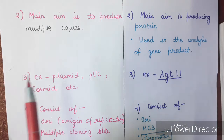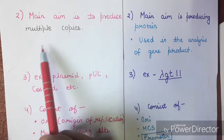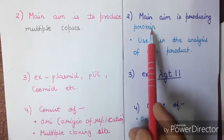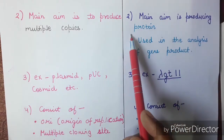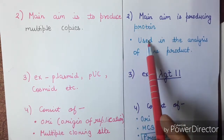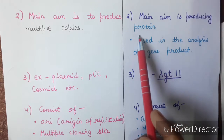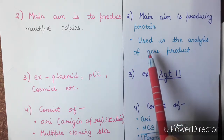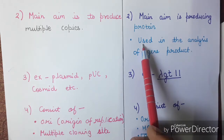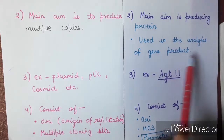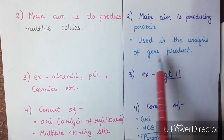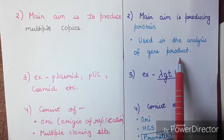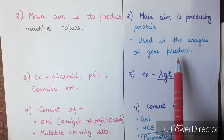The main aim of the cloning vector is to produce multiple copies. However, the main aim of the expression vector is to produce a desired protein, or to express a desired enzyme that we want to express. Expression vectors are also used in the analysis of gene products — to determine whether a particular gene is responsible for that product or not.